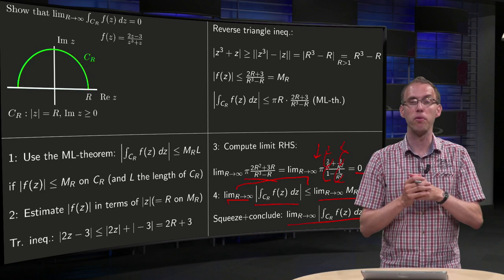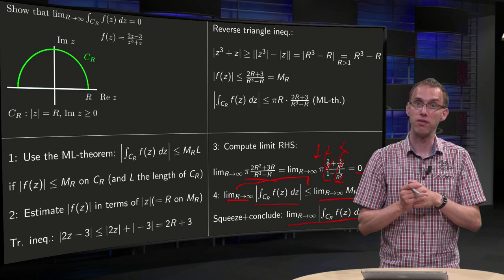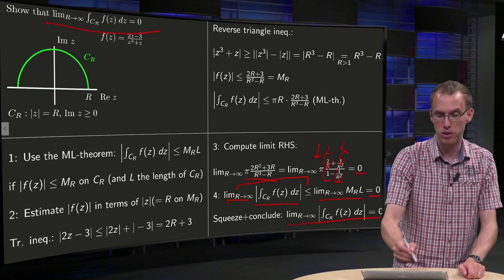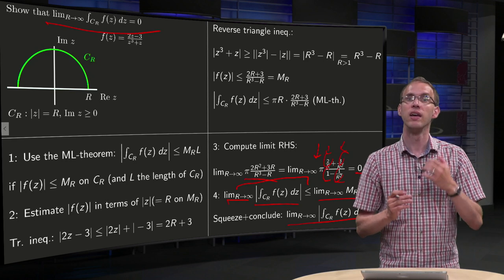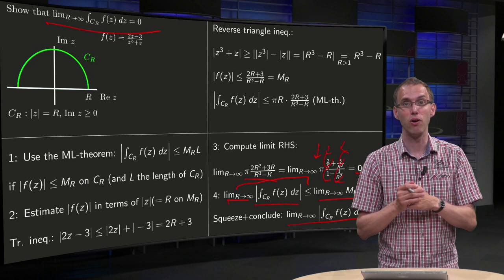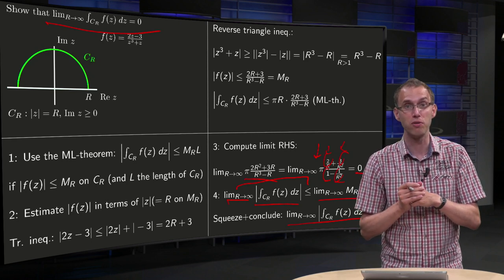And if the norm of a complex number equals 0, then the complex number itself as well, so we can draw this conclusion over here. Now question, have we now actually shown that the integral of f(z) along CR equals 0?